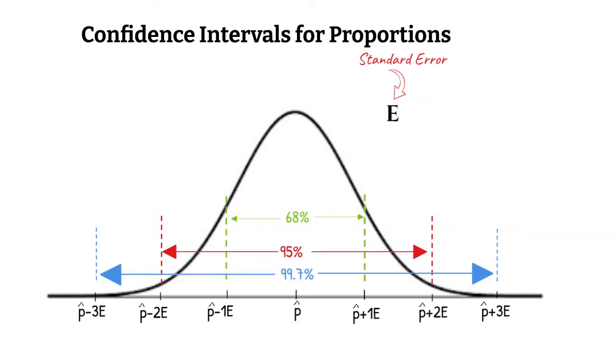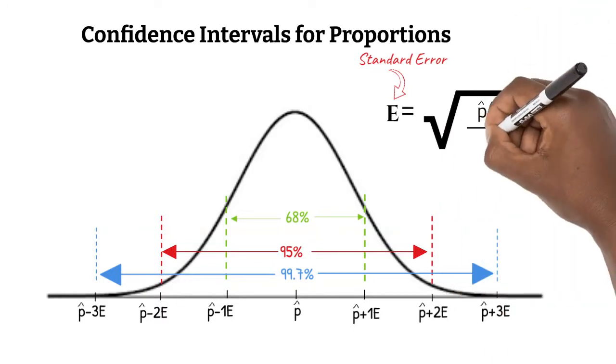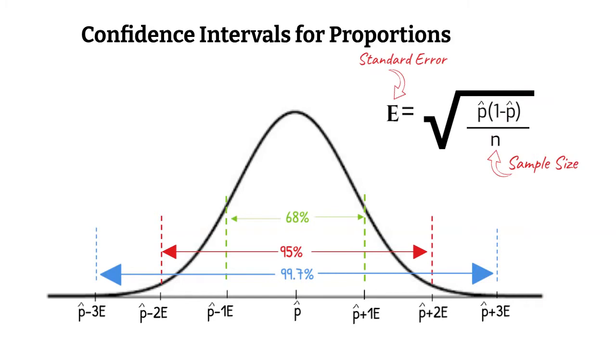To find the standard error, we use the formula E is equal to the square root of p times 1 minus p over n, or sample size. It is important to note that in this case, this is p hat, representing our proportion, not the average proportion.